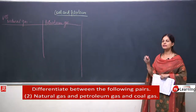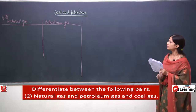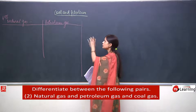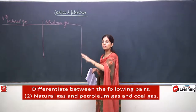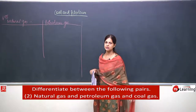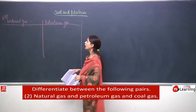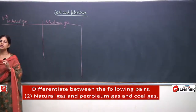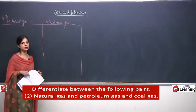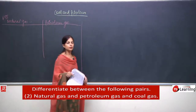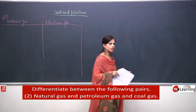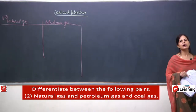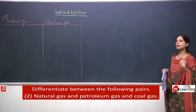So the first difference is how we get each gas. Natural gas floats at the upper surface, while petroleum gas is formed during the fractional distillation of crude oil. Natural gas is formed due to the decomposition of vegetables under the water.